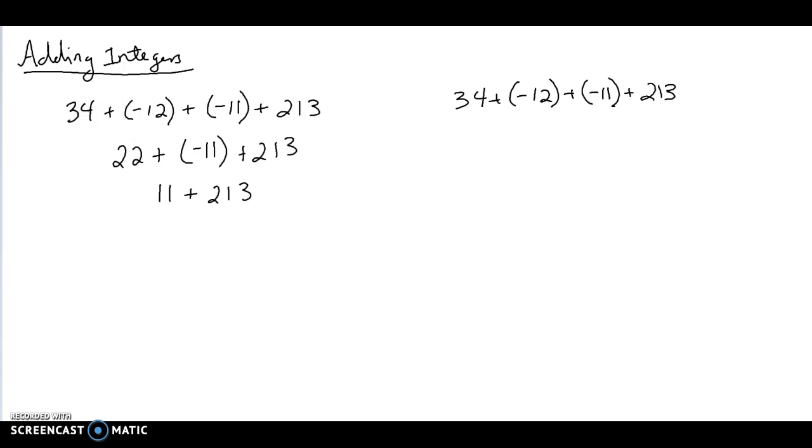I could actually put in some little arrows here to show you what we just did. Finally, I want to do 11 plus 213. Because our signs are the same, we're just going to add them together. That's going to give us a total of 224. So once again, if you're not good with your sign rules, this is really the way to go for you.